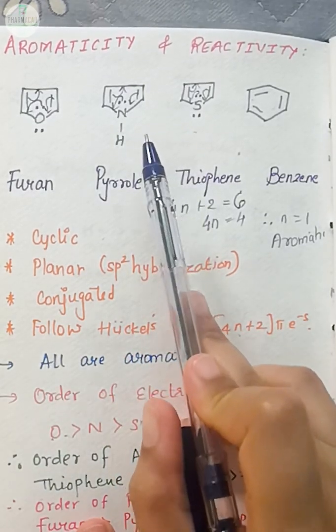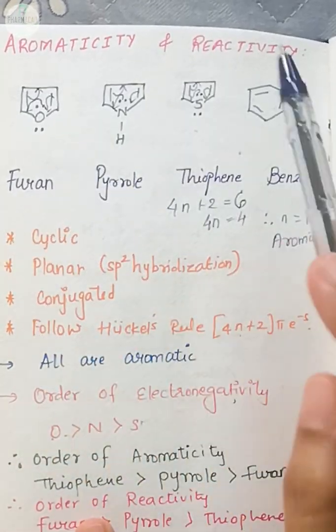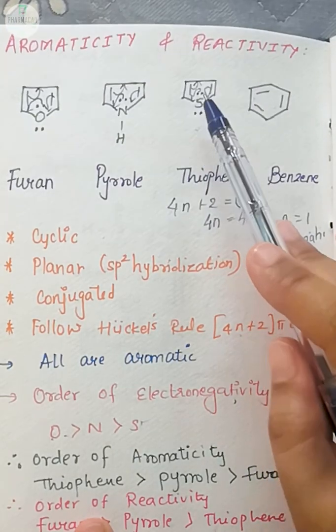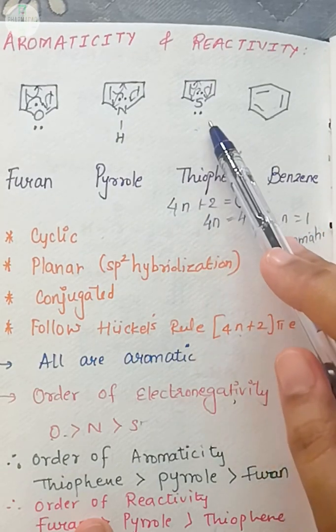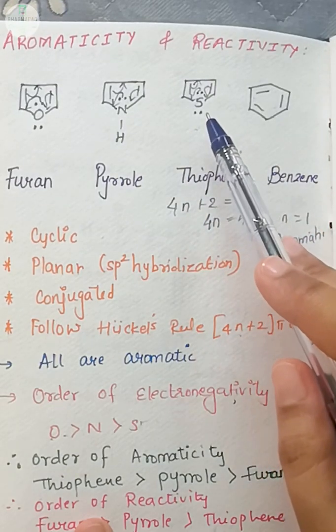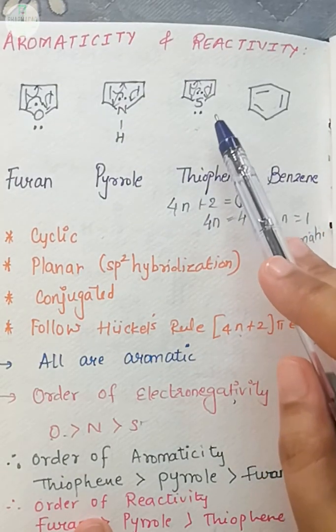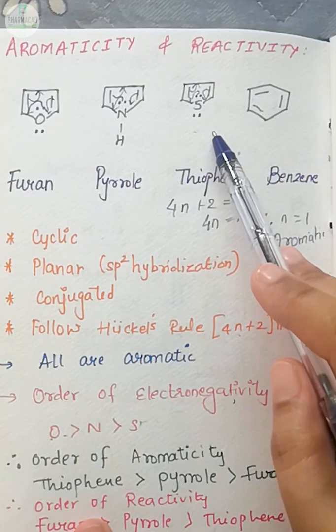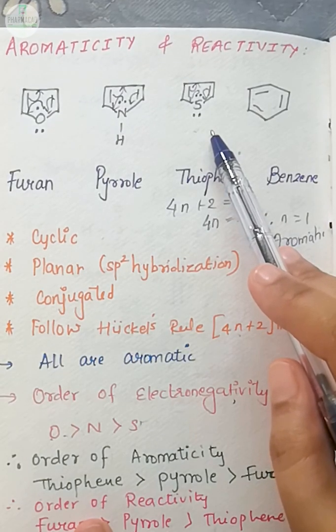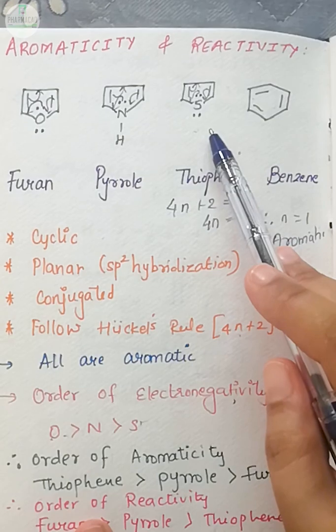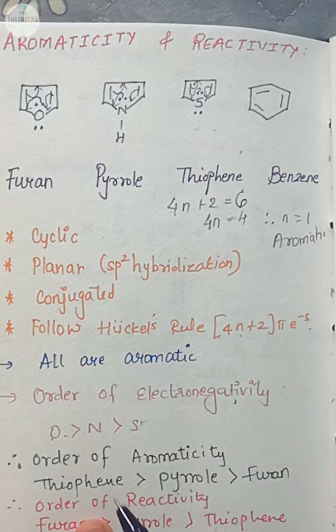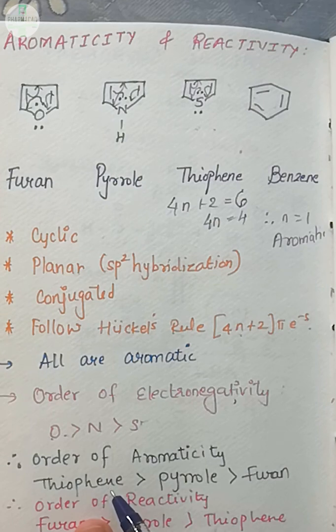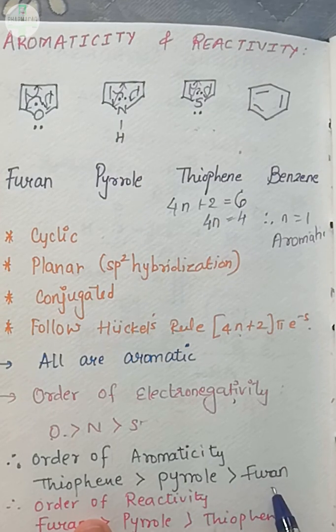Among these three, in which case will delocalization be easiest? Of course in the case of sulfur, in the case of thiophene. Because it is least electronegative, it will allow its lone pair to easily get involved in conjugation. So the order of aromaticity will be thiophene first, which will be most aromatic, followed by pyrrole, and last will be furan.